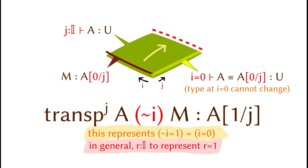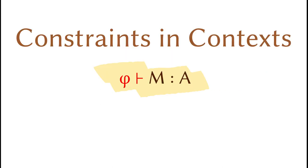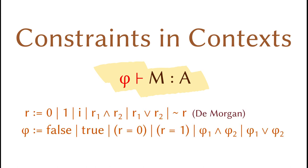There is one remaining concept we need to review before finishing up the formal description of homogeneous composition and coercion, the dimensional constraints, phi, in the contexts. These elements are partial because the context is restricted, and they might not make sense without the constraints. The syntax of a constraint phi is as follows. A dimension expression is either zero, one, a variable i, a meet, a join, or a reversal. They satisfy the law of de Morgan algebras.